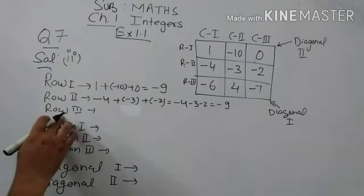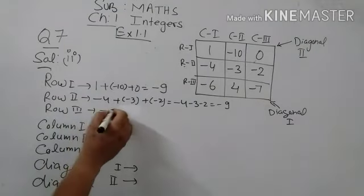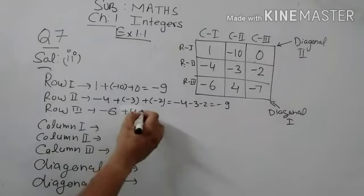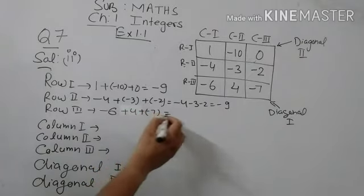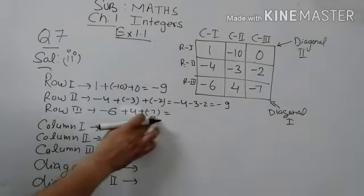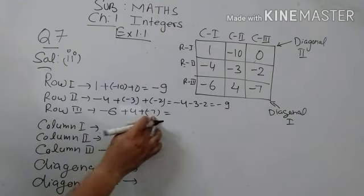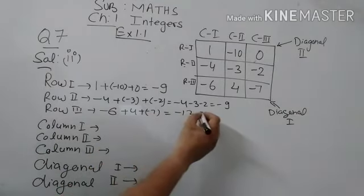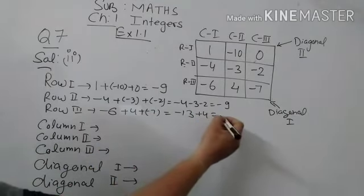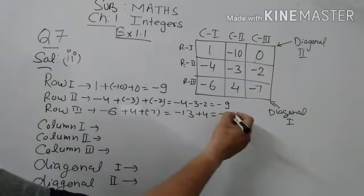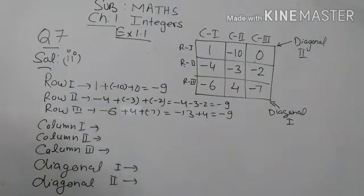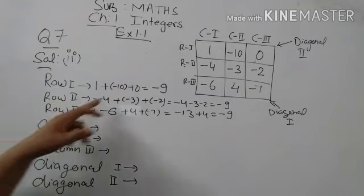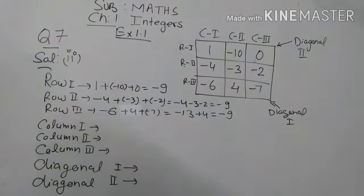For row three: minus 6, plus 4, and minus 7. So minus 6 minus 7 equals minus 13, plus 4 gives minus 9. So the values of row one, row two, and row three are all minus 9 — all are equal.